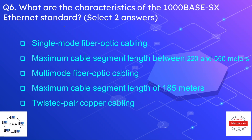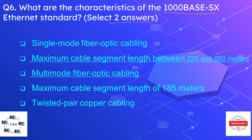Question number six: what are the characteristic features of the 1000BaseSX Ethernet standard? Select two correct options. The correct options are: the maximum cable segment length is between 220 and 550 meters, and it uses multi-mode fiber optic cabling.